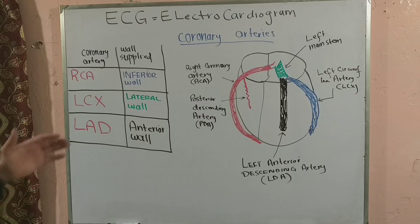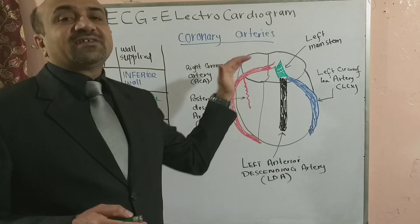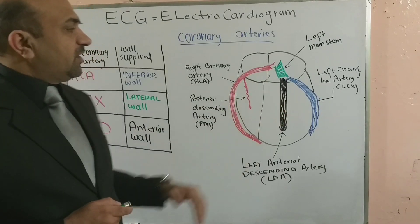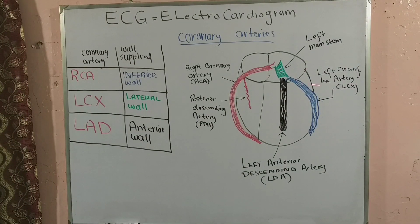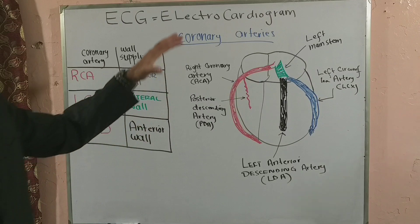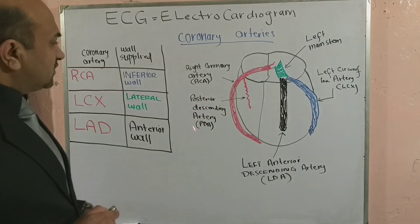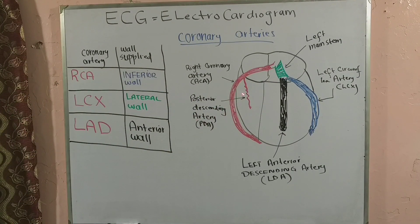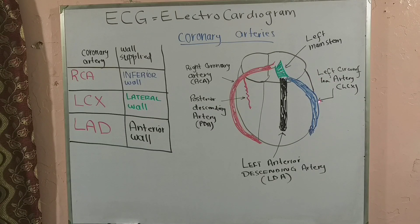The left main stem subdivides into the left circumflex artery — called circumflex because it has an acute turn on the left side. This is known as the LCX or left circumflex artery. In a little less than 30 percent of cases, the posterior descending artery originates from the left circumflex artery, making it the dominant coronary artery in those cases. From the left main stem also arises the left anterior descending artery.